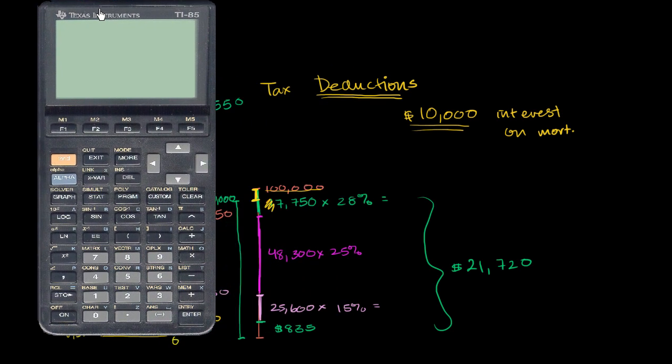There's two ways you could do it. You could just say, look, if my income is deducted by $10,000, I'm going to save 28% on that $10,000. You could just subtract $2,800 from this. But just to show you how it all works out to the same thing, let's just go through the same calculation again.